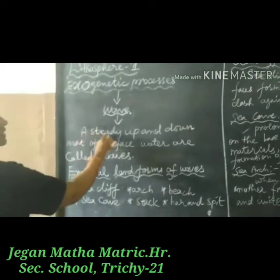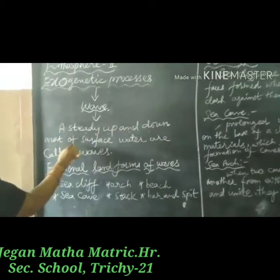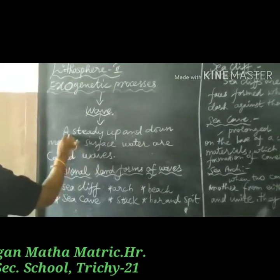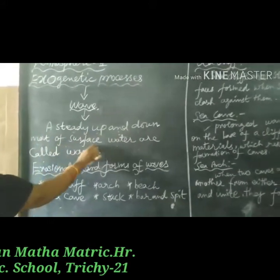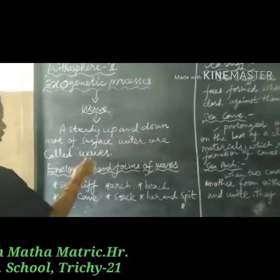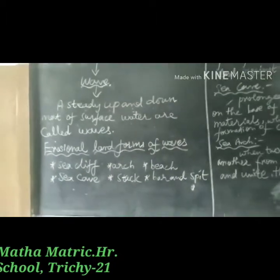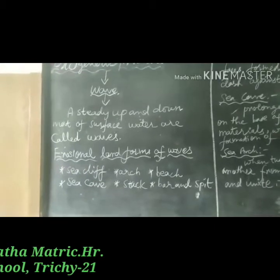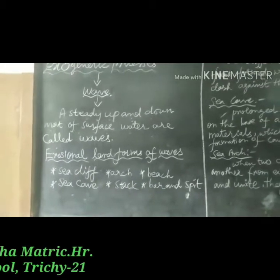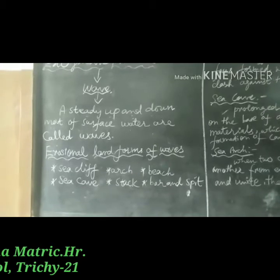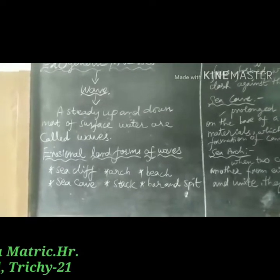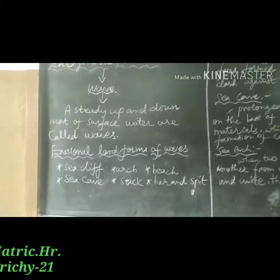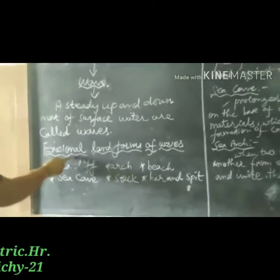The steady up-and-down movement of surface water is called waves. Sea waves are the most powerful agents of gradation. Their erosional, transportational, and depositional processes are confined near a very narrow belt along the coastal areas.